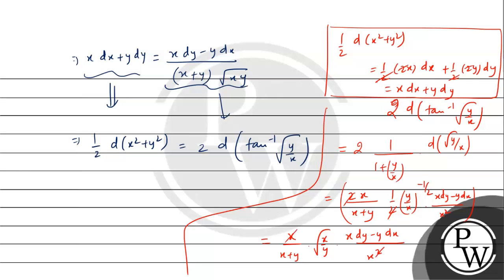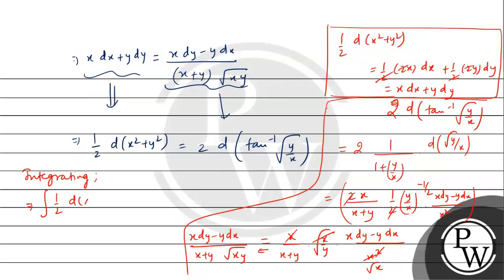Simplifying: the 2s cancel, (y/x)^(−1/2) becomes √(x/y), so we get x/(x+y) · √(x/y) · (x·dy − y·dx)/x². The x cancels with √x, giving √x·√y = √(xy) in the denominator, resulting in (x·dy − y·dx) / ((x+y)·√(xy)), which matches exactly. Now integrating both sides: integral of (1/2)·d(x²+y²) = 2·integral of d(tan⁻¹(√(y/x))).